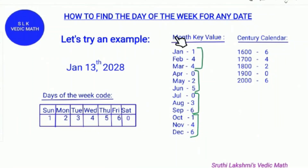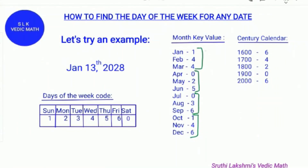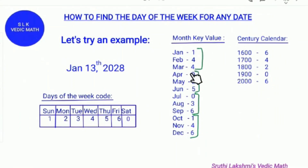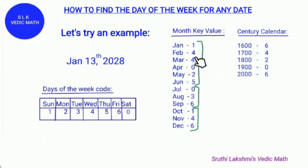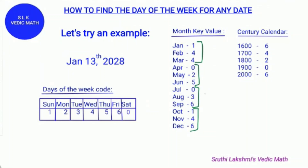To remember the month key value, first split it into three parts — three numbers. The first three numbers are 144, the last three numbers are 146, and the middle numbers are 025 and 036.